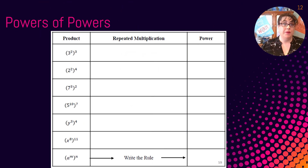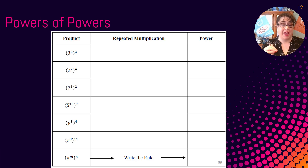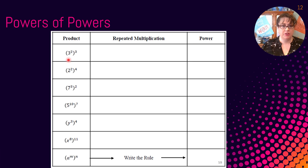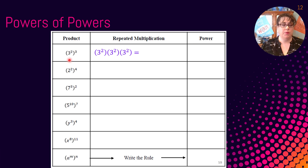So here we have Power of Powers. This one's a little different because what we're doing is raising our power to another power. So if we're looking at 3 squared to the third power, what we're going to do is write out 3 squared — that's our new base — three times. So our base is 3 squared, written out three times.